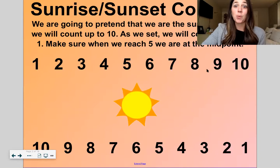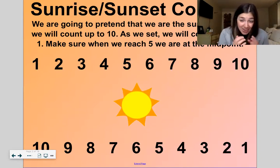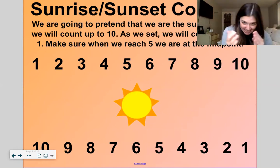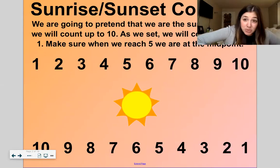All right, let's quick start off with sunrise counting and sunset counting, okay? So start off small, small, small and let's count all the way to ten and then we'll sunset back down. Ready?